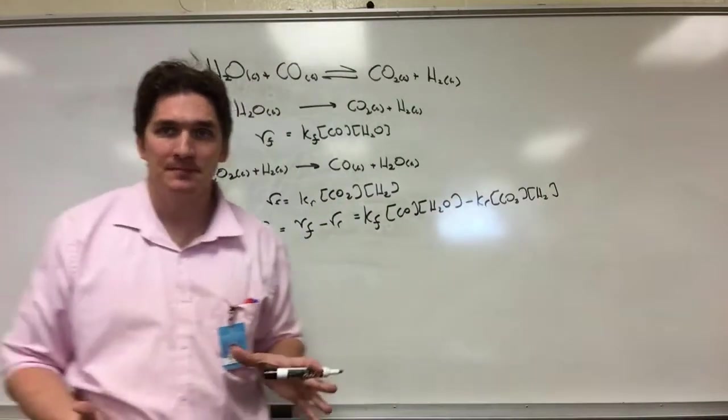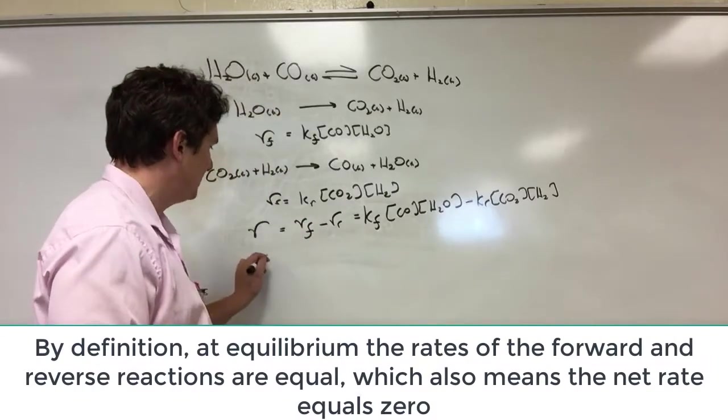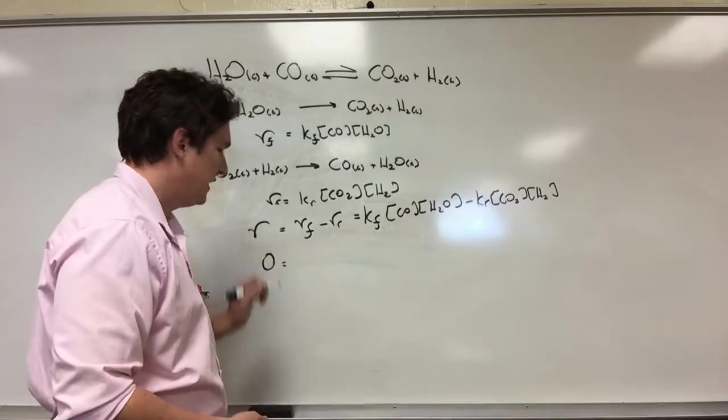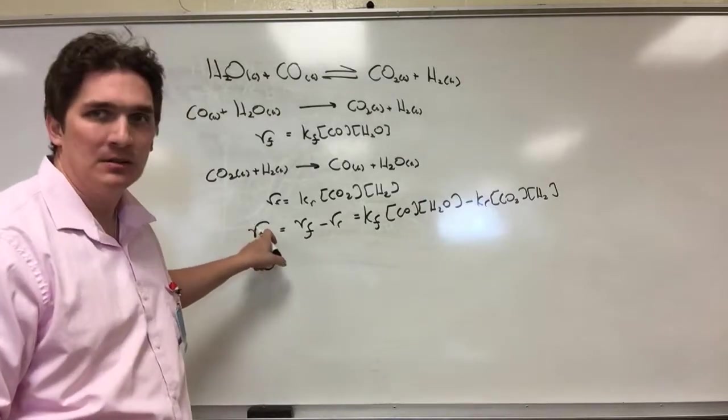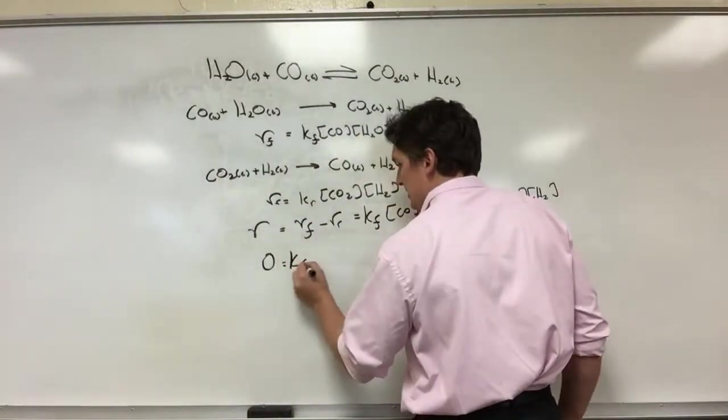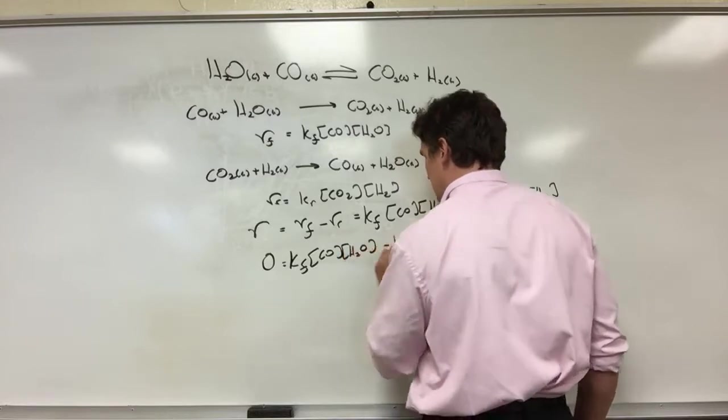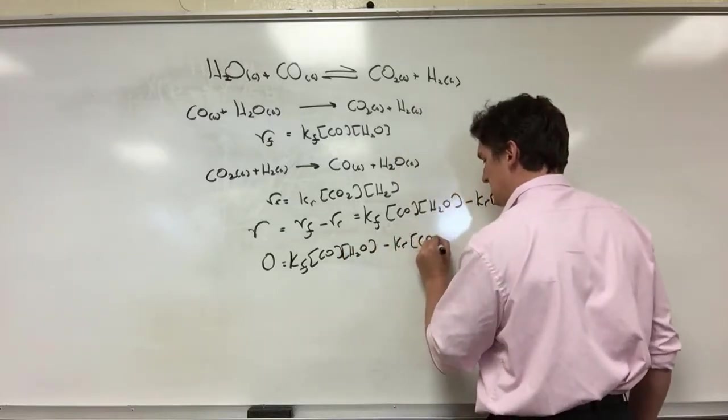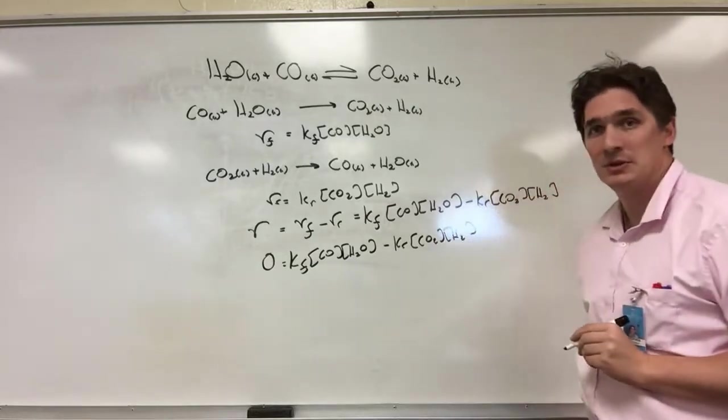But at equilibrium, meaning that the rates of the forward and reverse reactions are the same, I get that the overall rate has to be zero. At equilibrium, my net R, my difference between my forward and reverse reactions, is zero. So I get K forward, CO, H2O, minus K reverse, CO2, H2, equals zero.